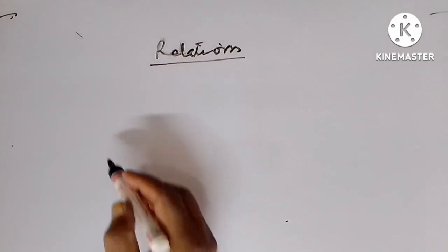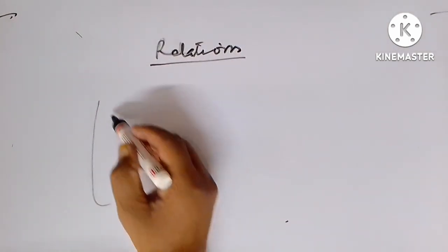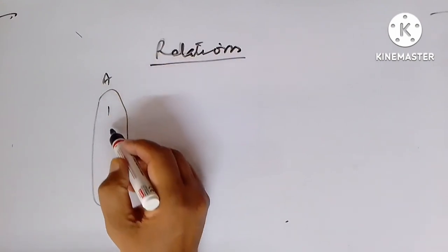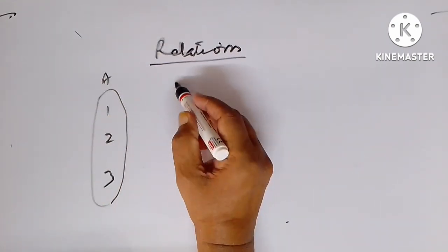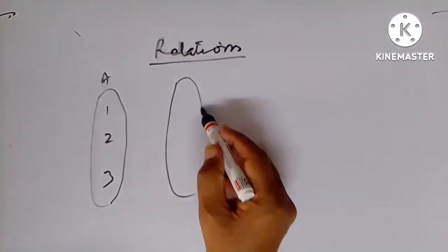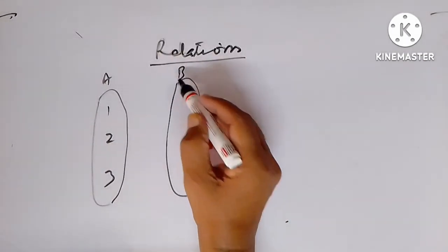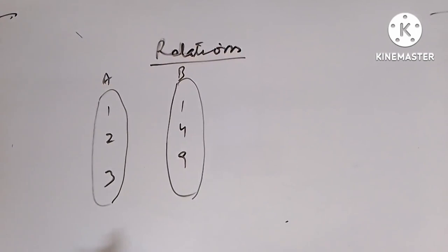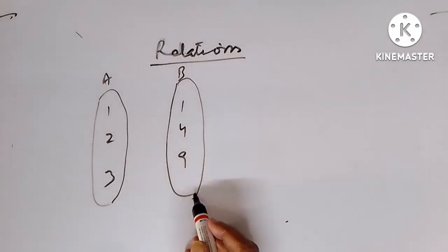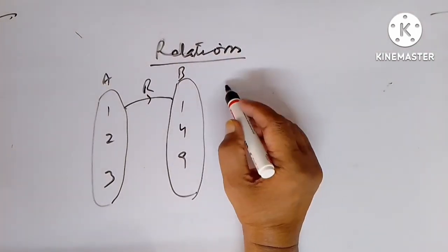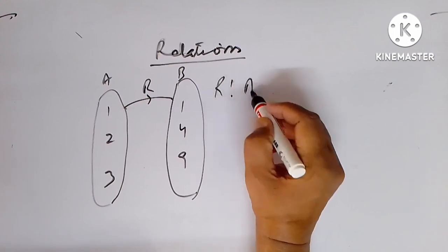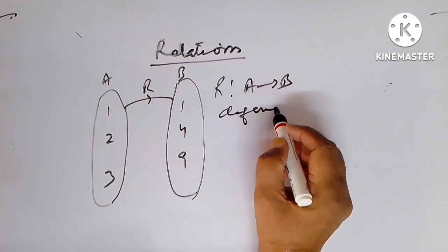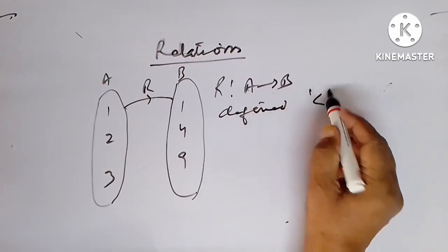We try to understand by some examples. If A is a set containing 1, 2, 3 and B is a set containing 1, 4, 9, and R is a relation from A to B defined by less than.